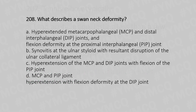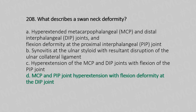Question 208: What describes a swan neck deformity? Option A: Hyperextended MCP and DIP joints and flexion deformity at proximal interphalangeal joint. Option B: Synovitis at the ulnar styloid with resultant disruption of the ulnar collateral ligament. Option C: Hyperextension of the MCP and DIP joint with flexion of the PIP joint. Option D: MCP and PIP joint hyperextension with flexion deformity at the DIP joint. The answer is Option D: MCP and PIP joint hyperextension with flexion deformity at the DIP joint.